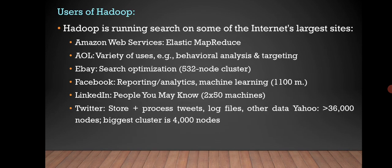Users of Hadoop: Hadoop is running on some of the internet's largest sites like Amazon Web Services which is Elastic MapReduce, AOL which uses a variety of features like behavioral analysis and targeting, eBay for search optimizations, Facebook for reporting analytics and machine learning, LinkedIn for people you may know using 2 into 50 machines, Twitter to store and process tweets and log files, and Yahoo with its biggest cluster of 4000 nodes.